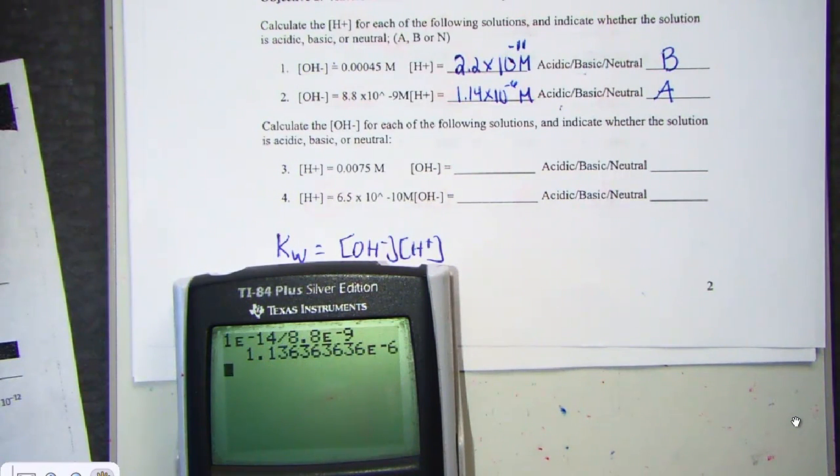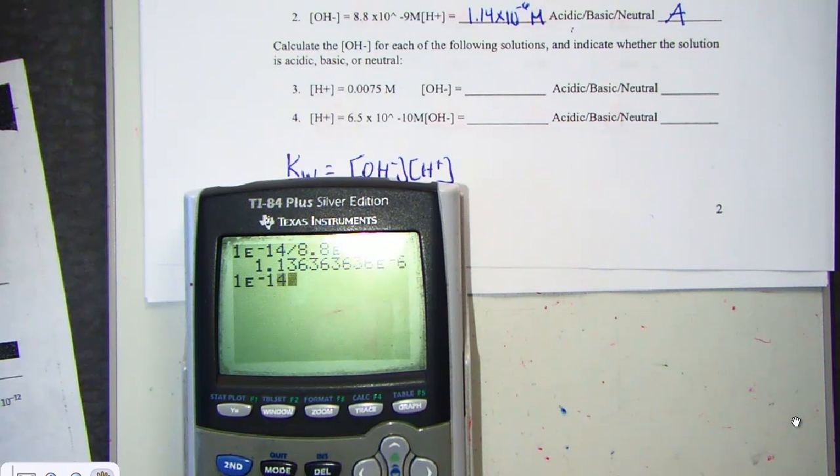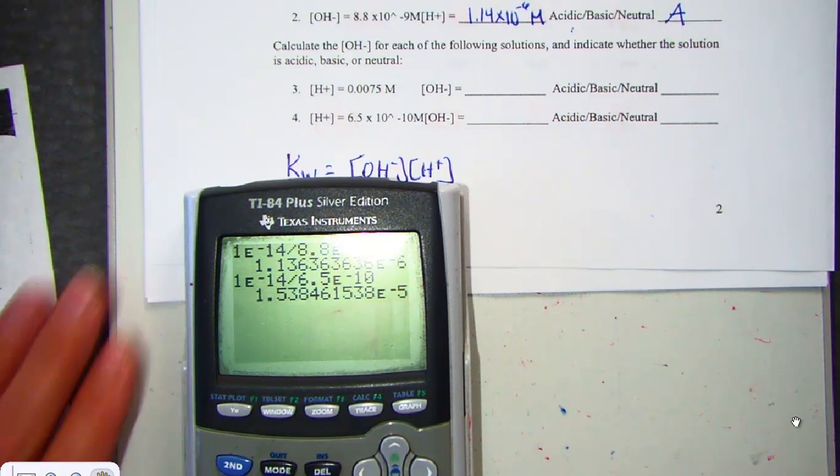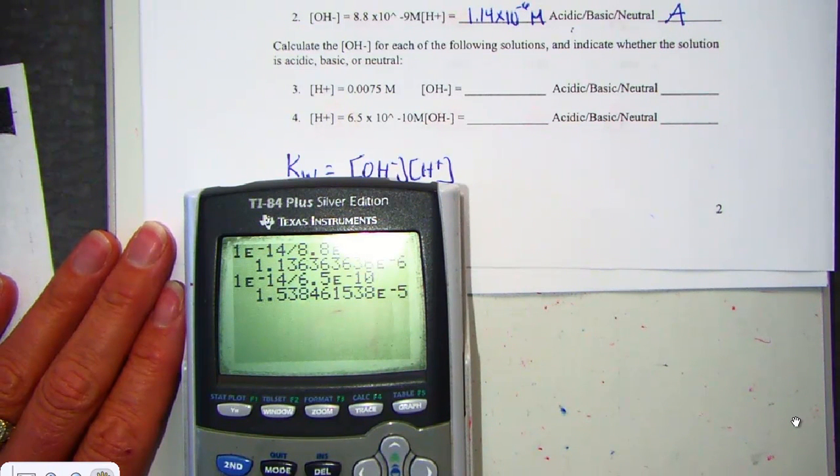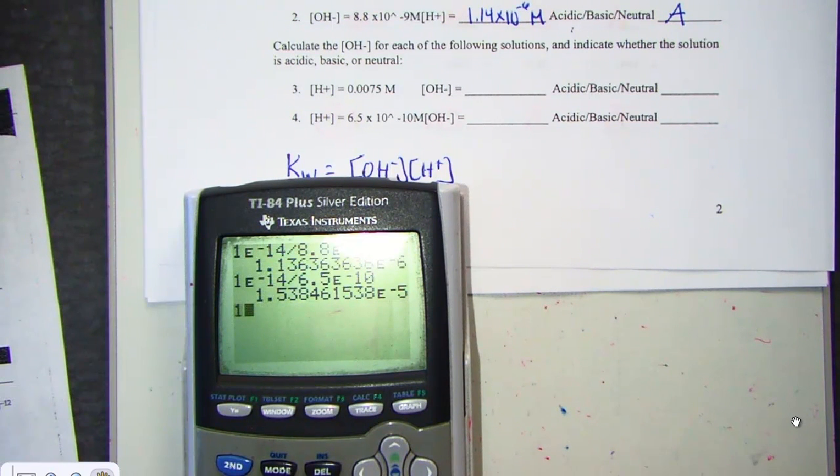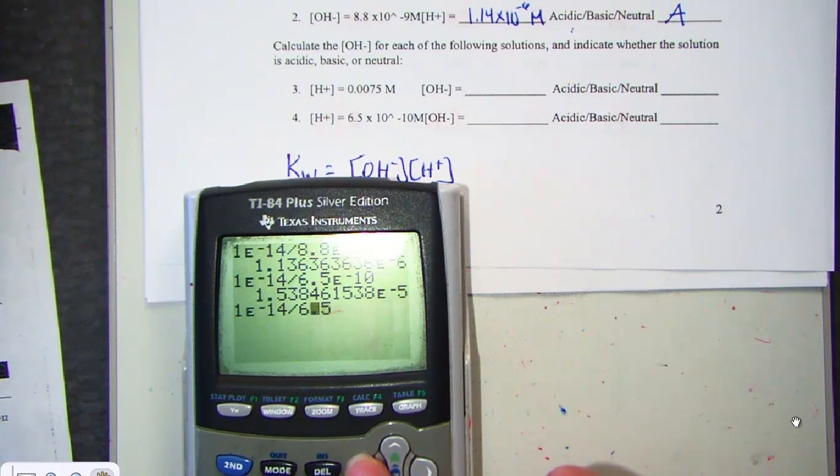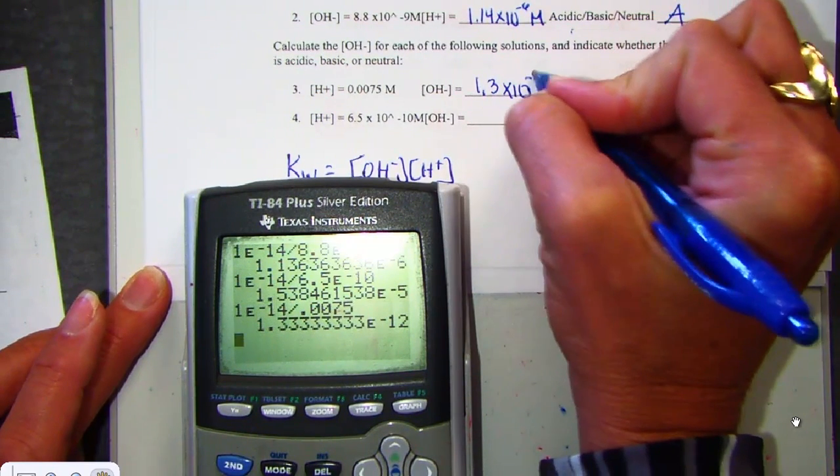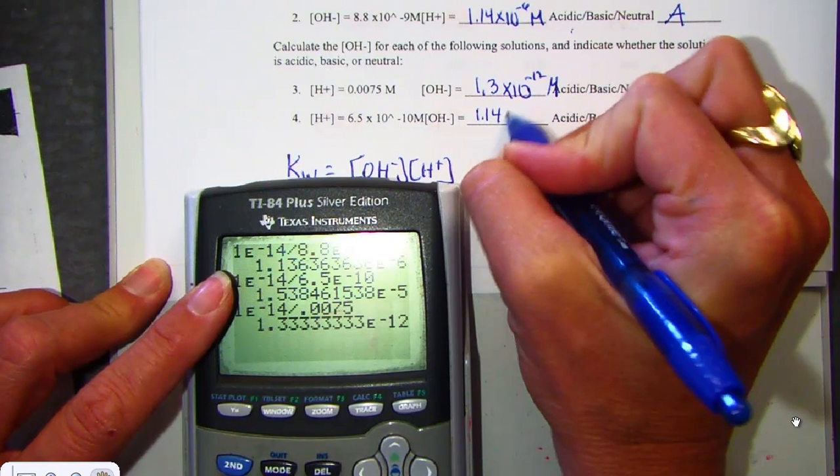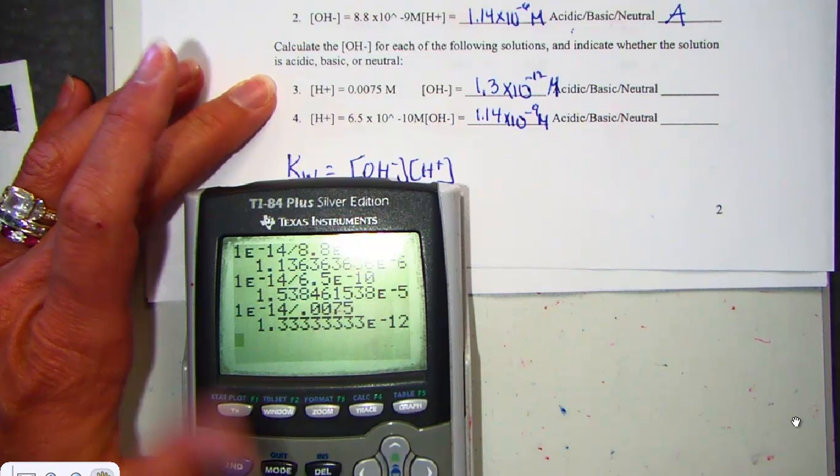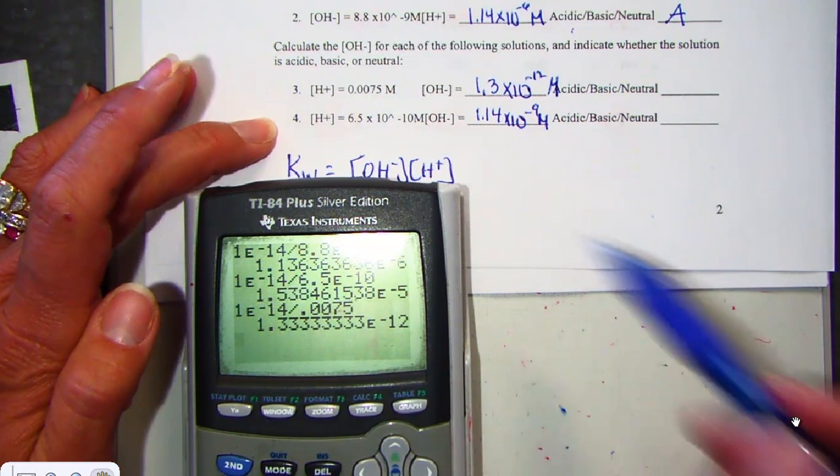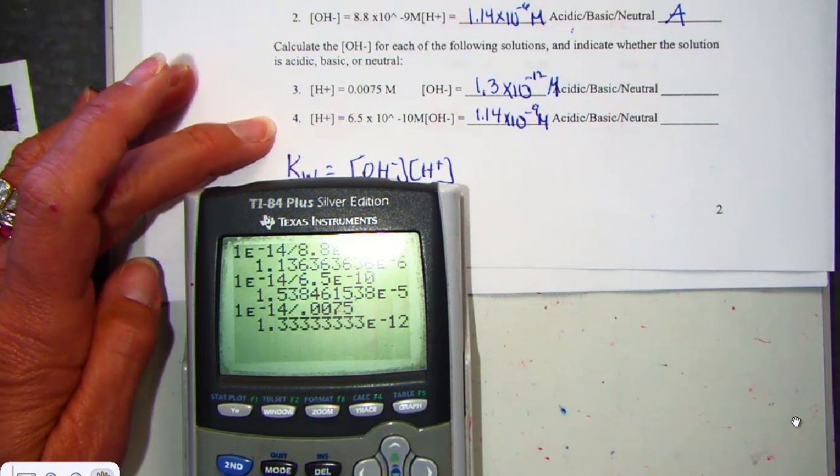Same problems, we're just given the other concentration, but it's the same calculator key sequence. Troy, let's hit this together. What did you find? I'll hit again - 1e negative 14th divided by... Oh, I was doing problem 4. 0.0075. Is that a match? That's a match, thank you. As a matter of fact, why don't I take both my answers? Number 3, I found 1.3 times 10 to the negative 12th molar units. And number 4, we hit twice, 1.14 times 10 to the negative 9th molar units.